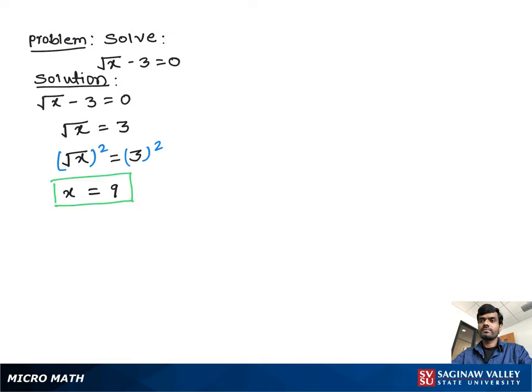Let's check that the x value is the right value for the original equation or not. To check this, we substitute the x value in our original equation. Let's write the original equation one more time: square root x minus 3 equal to 0.